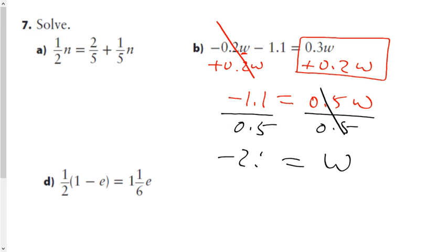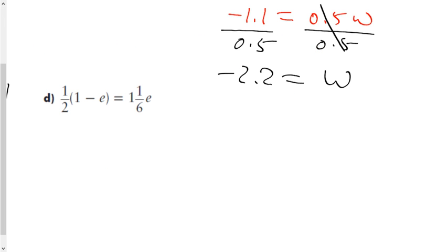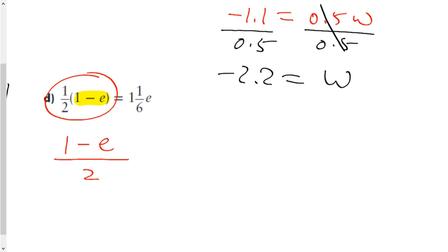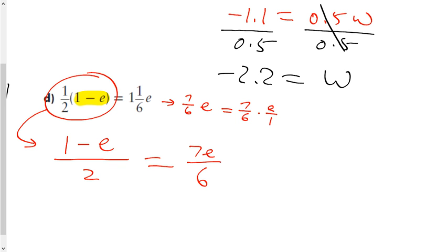For question d, this is a little tricky. I need to think of the term as being half of the algebraic expression (1 minus e). So the left side is half of (1 minus e). I don't like the fractional coefficient on the right side either, so I'm going to rewrite it as an improper fraction first: 7 and 1/6 of e becomes 7e over 6, since it's 7 over 6 multiplied by e over 1.